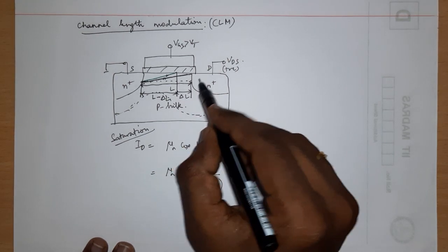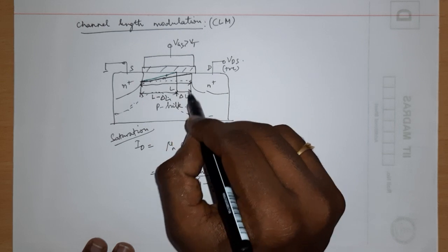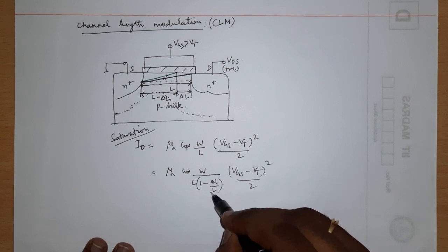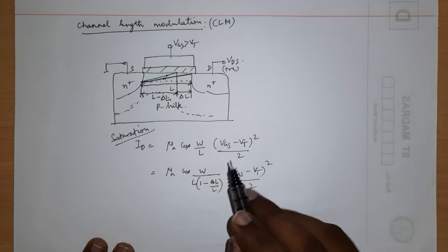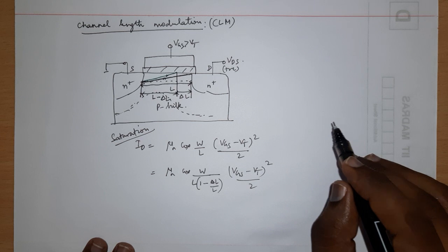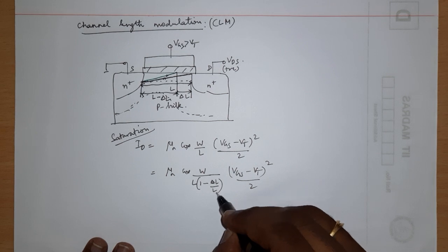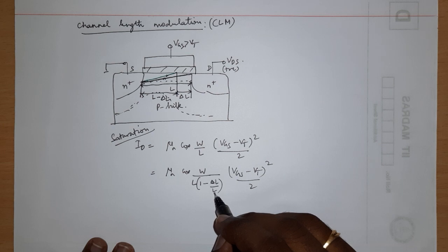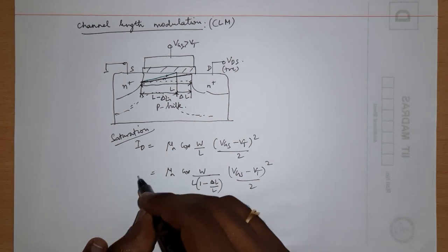Delta L is actually very small. I have exaggerated the situation in the diagram. For a long channel device, delta L compared to L is negligibly small, so you can neglect this term and still keep W/L, and the current is almost independent of VDS. However, when you come to a short channel device, L itself is very small, and delta L by L will be significant enough to meaningfully affect the current.